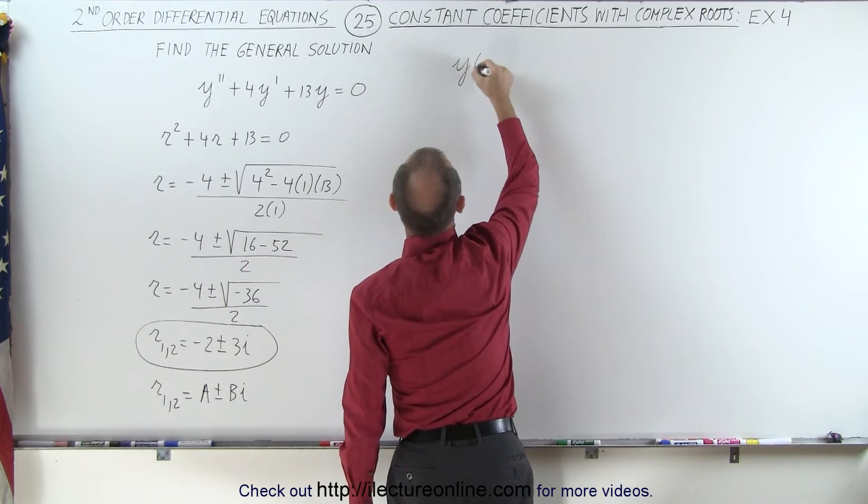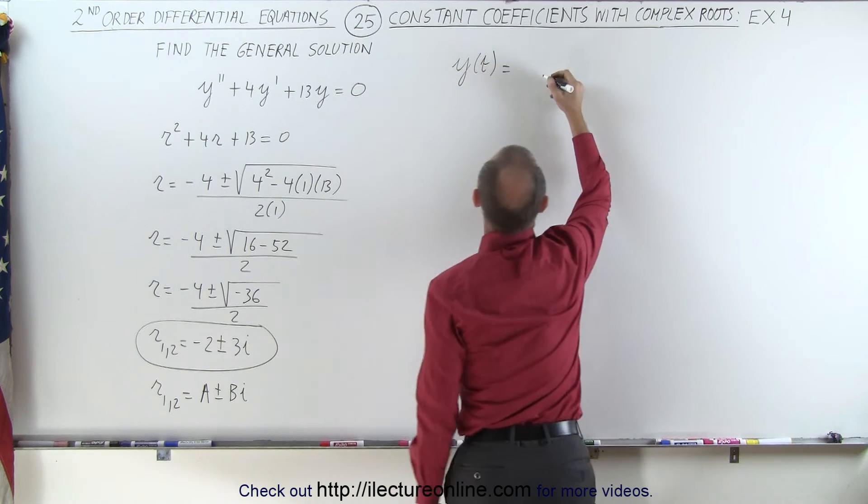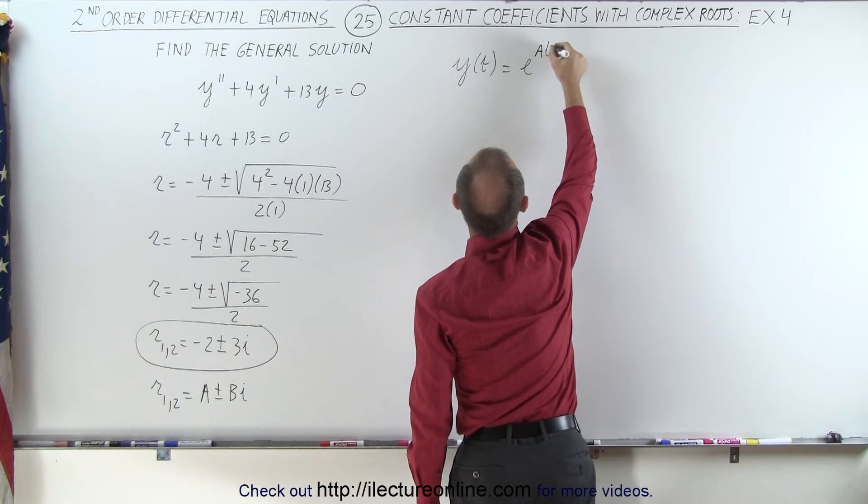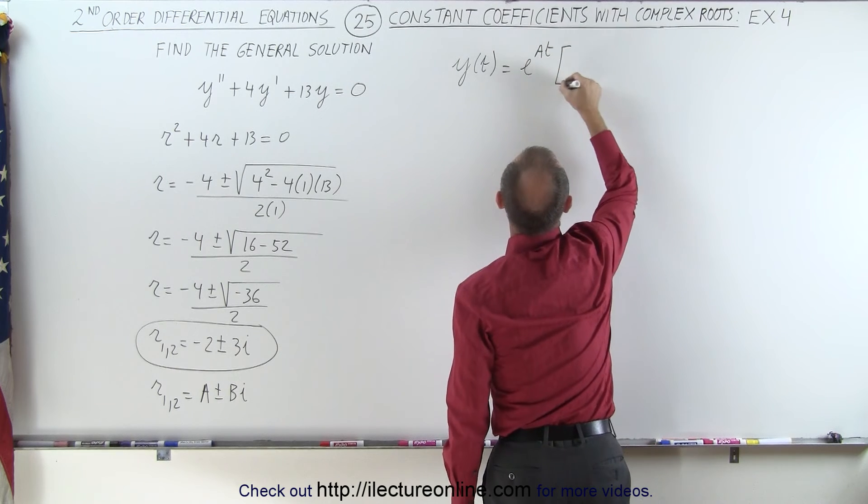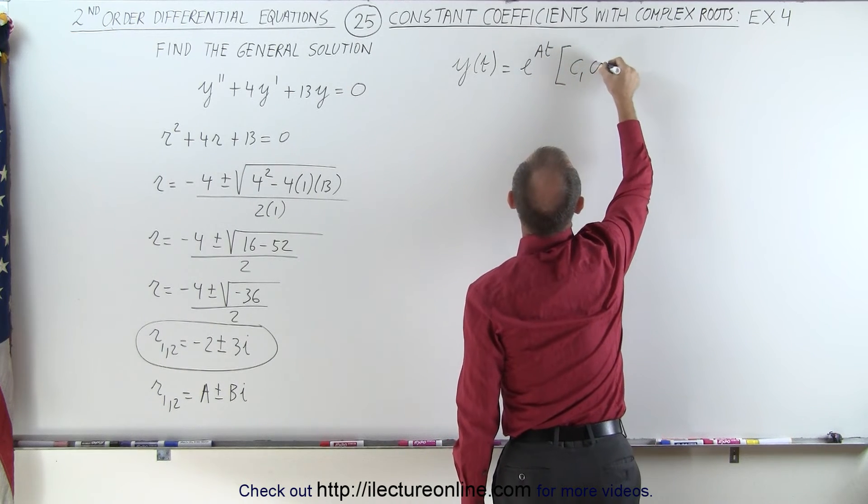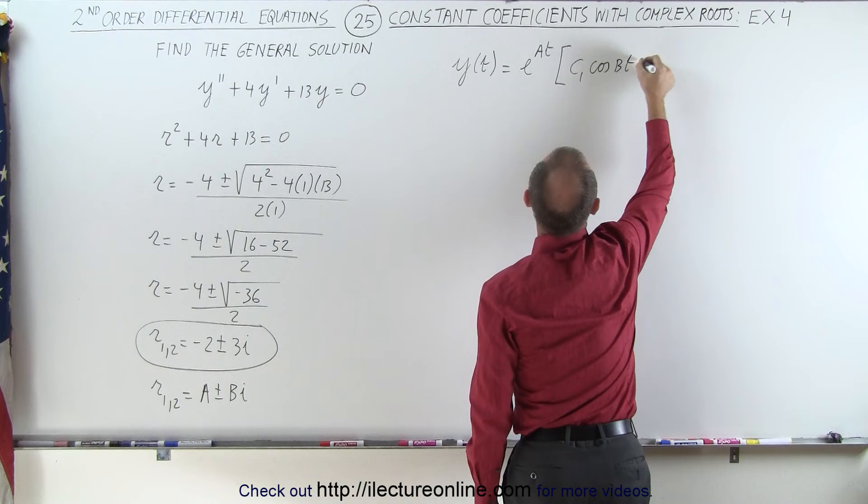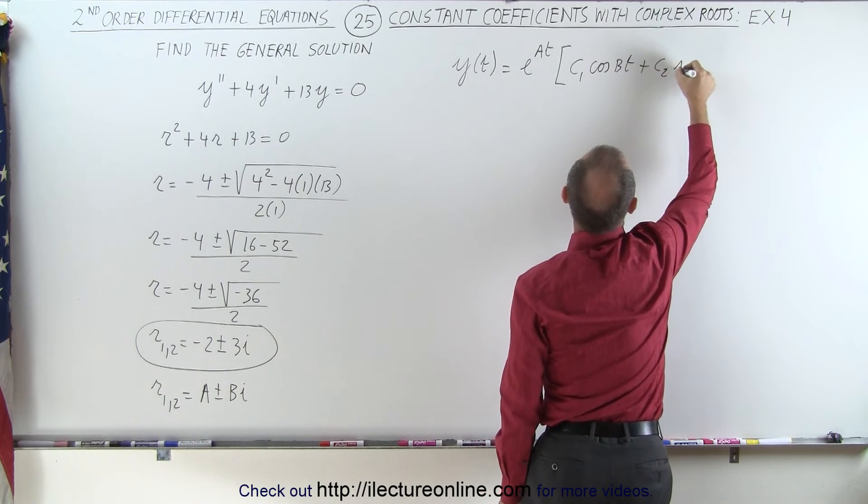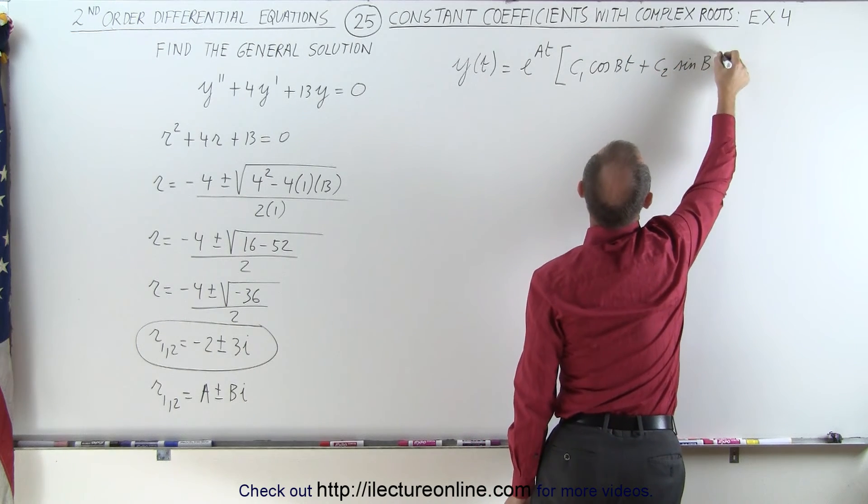We have y as a function of t is equal to e to the at times the quantity c1 times the cosine of bt plus c2 times the sine of bt.